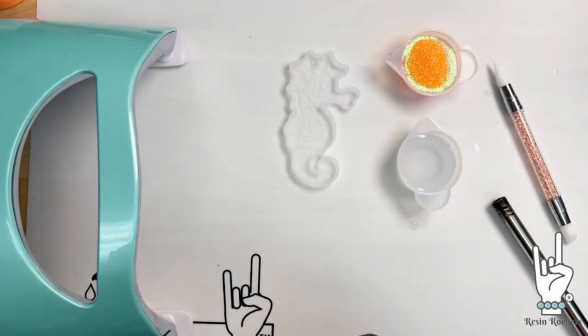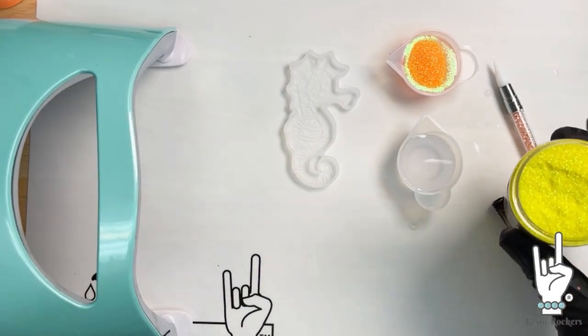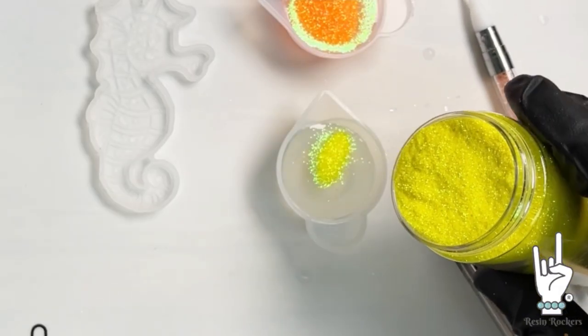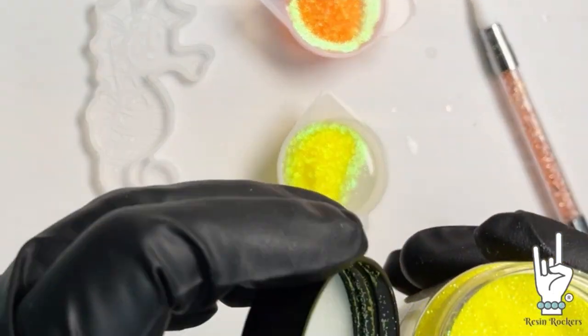Then we're going to use our Yellow Submarine. This one is another one of my favorites. It is also an iridescent and very fluorescent and very vibrant.